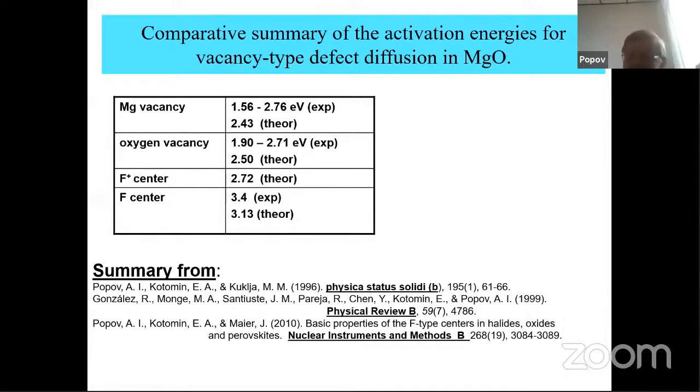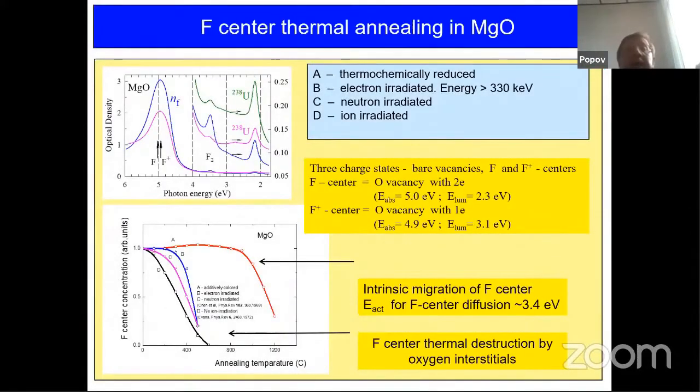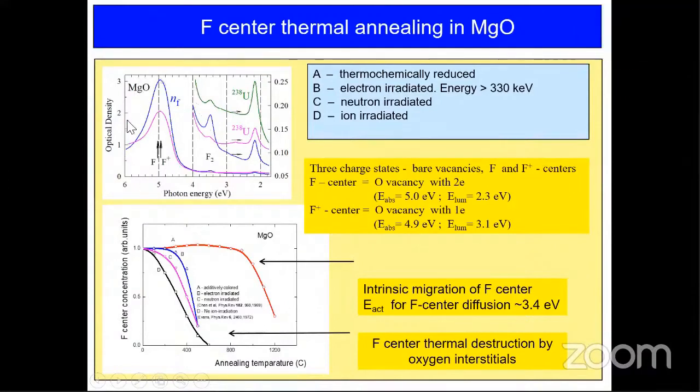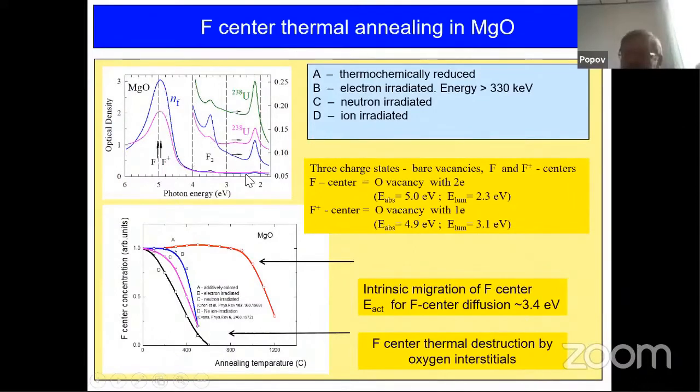If we look at the absorption spectra of MgO, this is a spectrum obtained after neutron radiation, and two others after radiation with uranium ions. And you can see here that there is strong F and F+ absorption bands. Only in MgO, these two defects have almost similar optical absorption, which coincide, but show different luminescence behavior. And such F centers can be produced by fast electron radiation with energy higher than 330 kiloelectron volts, also by neutron and ion radiation, as well as thermochemical reduction.